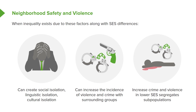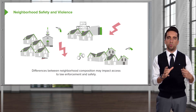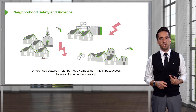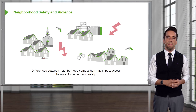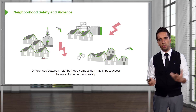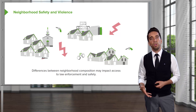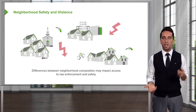Differences between neighborhood composition may impact access to law enforcement as well. One of the drivers creating these neighborhoods was socioeconomic status. If you are on the lower end of the SES scale, you tend to have lower paying jobs, lower quality of life, rougher jobs, less education, and less access to social resources — including things like police stations, shelters, and law enforcement ensuring neighborhood safety. Versus a highly affluent area where you have lots of police, shelters, and resources. That disparity can actually lead to increased safety and violence issues.